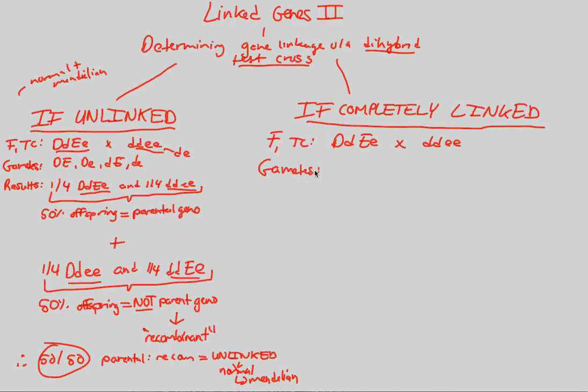The gametes here are going to be a bit different. The gametes are going to be the following: capital D, capital E, lowercase d, lowercase e—a homozygous dominant and a homozygous recessive combination.